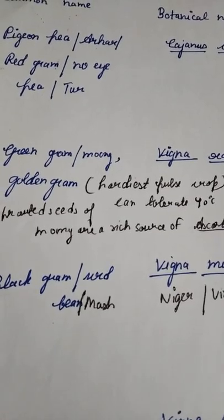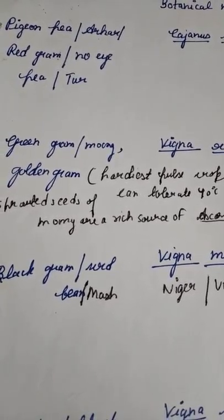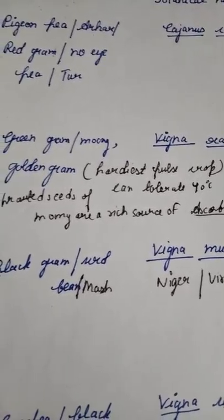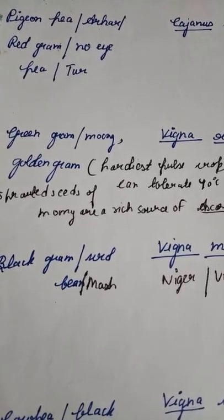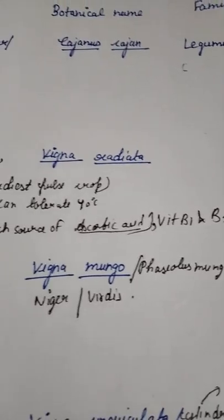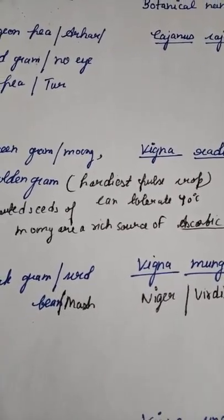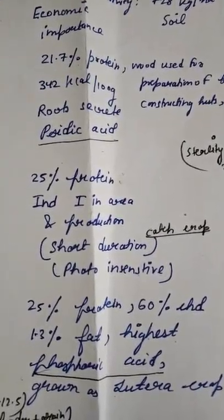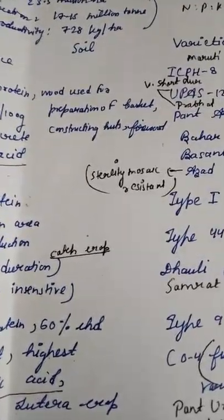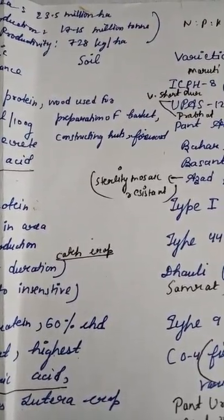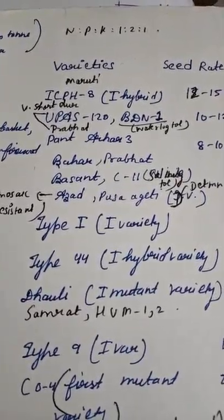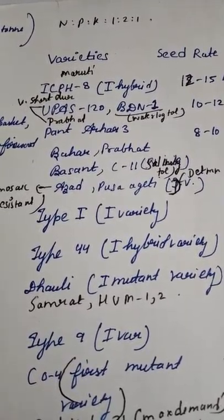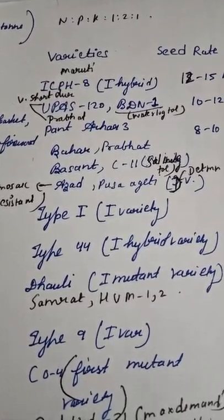PGNP (pigeon pea) has hypogeal germination — all kharif crops have epigeal germination except PGNP. PGNP is also called arhar, red gram, noip, or tur. Scientific name of arhar is Cajanus cajan. It is an often cross-pollinated crop. Roots of PGNP secrete oxalic acid. The wood of PGNP is used for baskets, construction, and firewood. ICPH-8 is the first hybrid variety of PGNP. Upas-120 and Prabhat are very short duration varieties. BDN1 is a waterlogging tolerant variety.